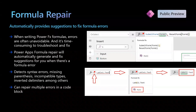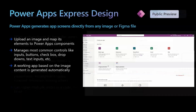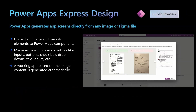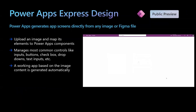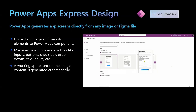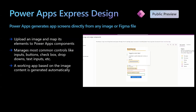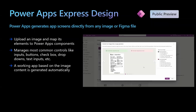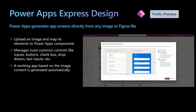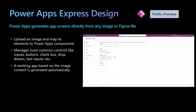We also have a formula repair feature in Power Apps which automatically provides suggestions to fix Power FX formulas. It has the capability to detect syntax errors, missing parentheses, incompatible types, and so on. In Power Apps, we also have Express Design capabilities, which helps generate app screens based on design images or a Figma file. You can upload a wireframe, design image, or a Figma file and map its elements to Power Apps components, and Express Design will create an app screen in minutes.